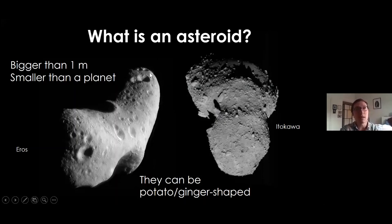They are often potato and ginger shaped. This is Eros, about 30 kilometers long. And this is Itakawa, a near-Earth asteroid visited by a Japanese spacecraft. That one comes by the Earth all the time and is about 500 meters across, quite large.